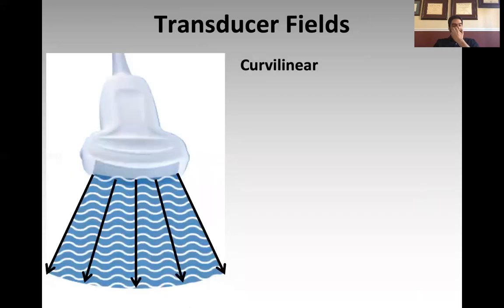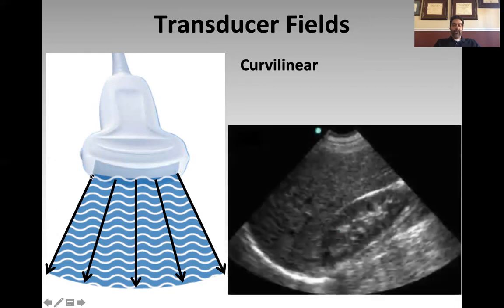The curvilinear probe has its crystals arranged in a curvilinear fashion, parallel to the nose of that probe. When those crystals vibrate, they send out sound in a sort of windshield-wiper path-shaped field, which produces an image shaped like that. Again, the dot on the probe correlates with the dot on the screen.